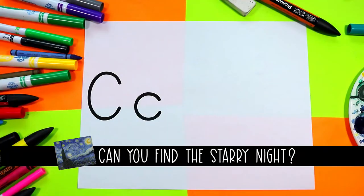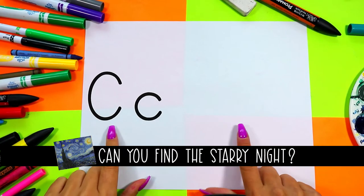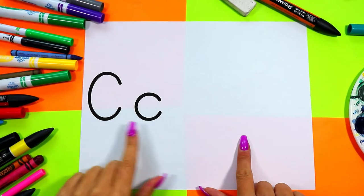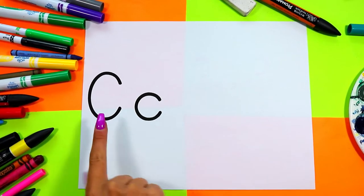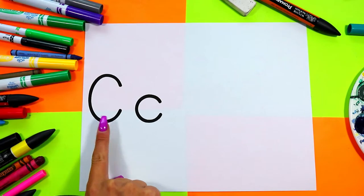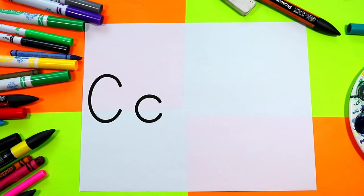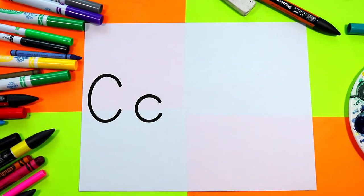We're going to draw a lovely little cat because cats start with the letter C. We have an uppercase C and a lowercase C, and the word cat starts with the letter C.